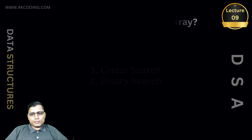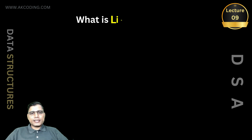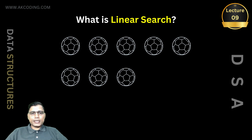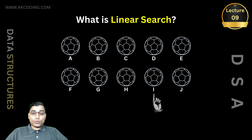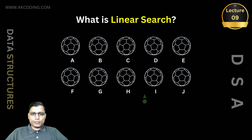Let's dive right into it. First things first — what is linear search? To understand linear search, let's take a practical use case. Suppose we have 10 balls and we name them A, B, C, D, E, F, G, H, I, and J. Now if I tell you to find ball I, what would be your approach? The simplest way is to search the balls one by one from the beginning and move forward until you find the target. That's exactly what linear search is.